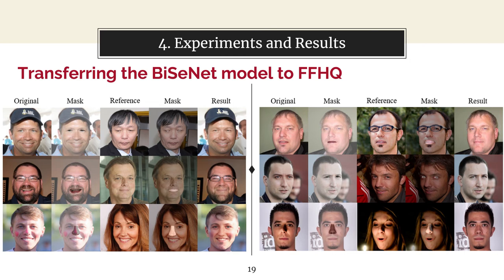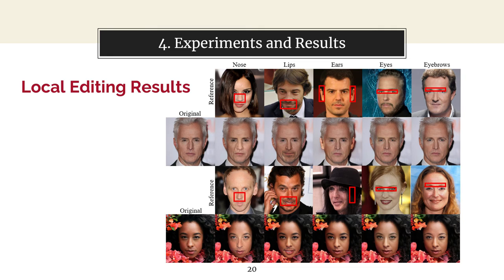The result from experiment set C, using the FFHQ dataset and generated masks, shows high accuracy. The summary of local editing results on slide 20 shows that the transplanted part — covered in red — is successfully transferred to the original image, whether it is the nose, lips, ears, or other facial regions.